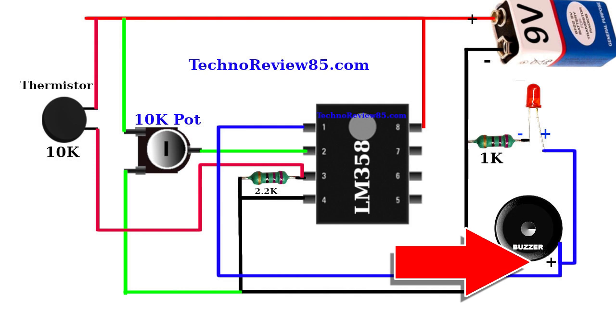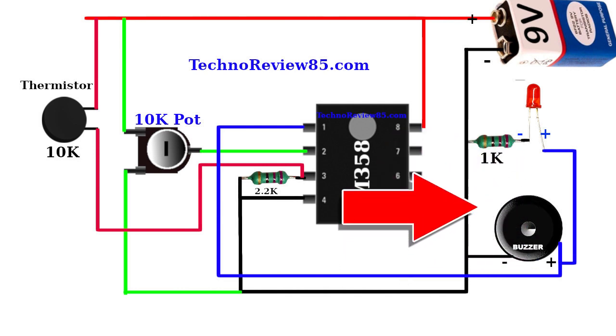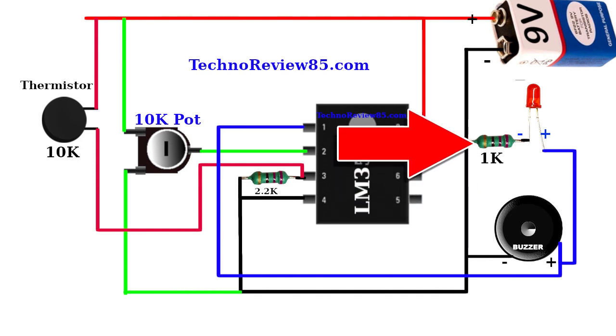IC pin 1 is connected to the buzzer and LED positive. Buzzer negative is connected to negative line and LED negative is also connected to negative line by a 1K resistor. The potentiometer middle pin is connected to IC pin 2 and the other two pins are connected to positive and negative line.